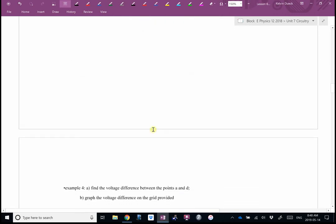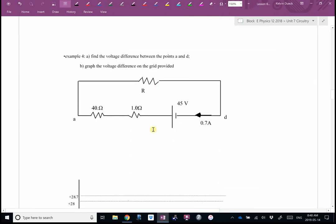Okay? Foxtrot comic there. Example four. Find the voltage difference between points A and D. And then it says graph the voltage. We're not going to bother graphing it. I keep forgetting to remove that part. But let's find the voltage difference. Okay. Step one. Label downhill. Only one battery, so downhill is pretty obvious.